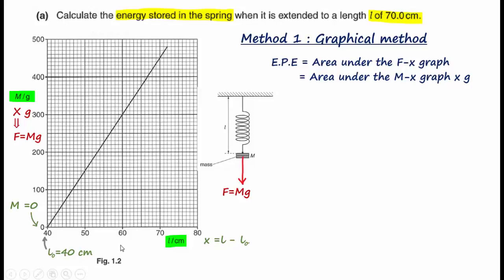If we deduct 40 cm from each value of L, the horizontal axis becomes the extension axis. This is just a shift of the L value by a fixed amount, and it does not change the shape of the graph. EPE can now be written as the area under the m-L graph times g, completing the link between the F-x graph and the m-L graph. All that remains is to read off the values from the graph.